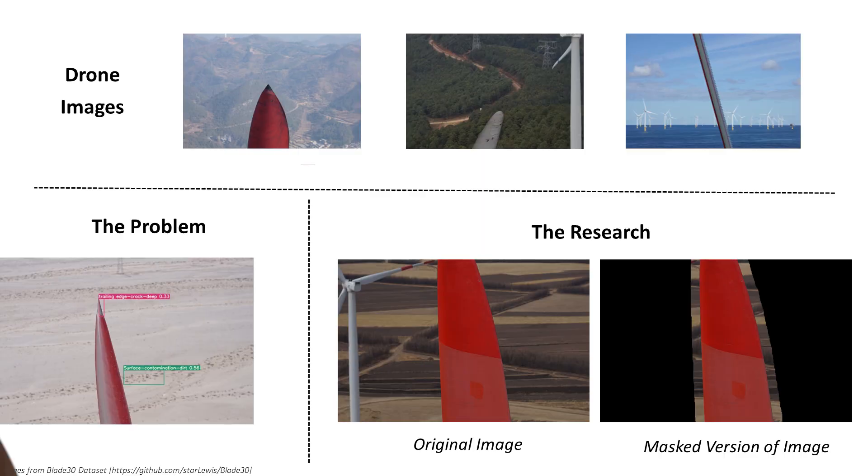So, instead of a human having to inspect a wind turbine for any defects or contamination on the blade surface for maintenance purposes, what if we use a drone for that purpose? A drone flies along the trajectory of the wind turbine blade and captures images such as the ones you see on the top of the slide. We then take these images to an artificial intelligence algorithm and train the computer to recognize any defects that are present automatically.